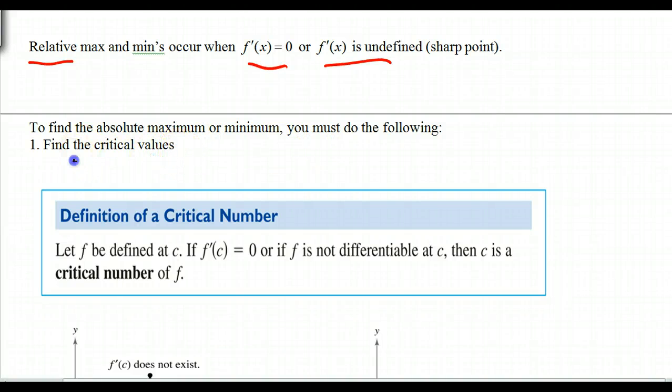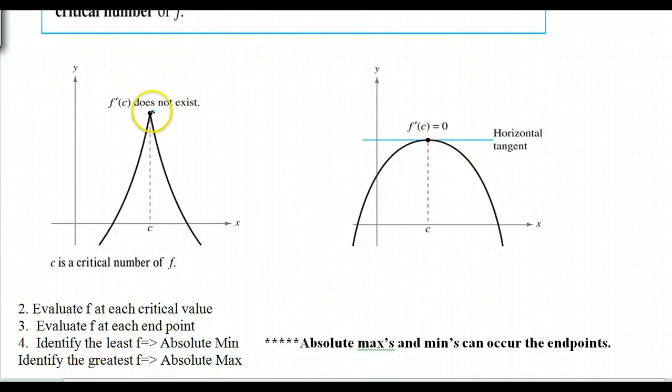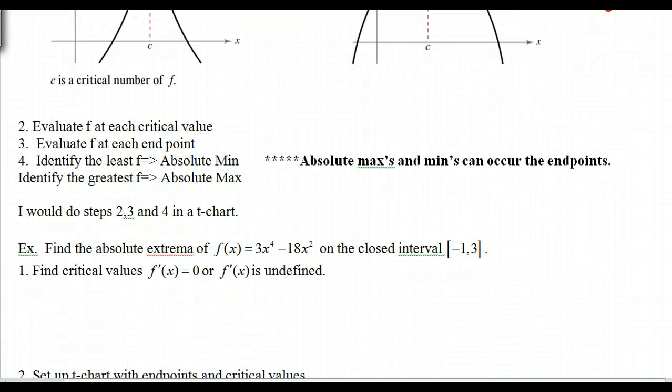And so critical values or critical number would be f prime of c is equal to zero, or if f is not differentiable at c, then c is a critical number of f. So right here, this would be a critical value because it is a sharp point. That means that f prime of c does not exist. And then this would be another one where we'd have a horizontal tangent. And obviously, if we have one like this, this would also be a critical value c there.